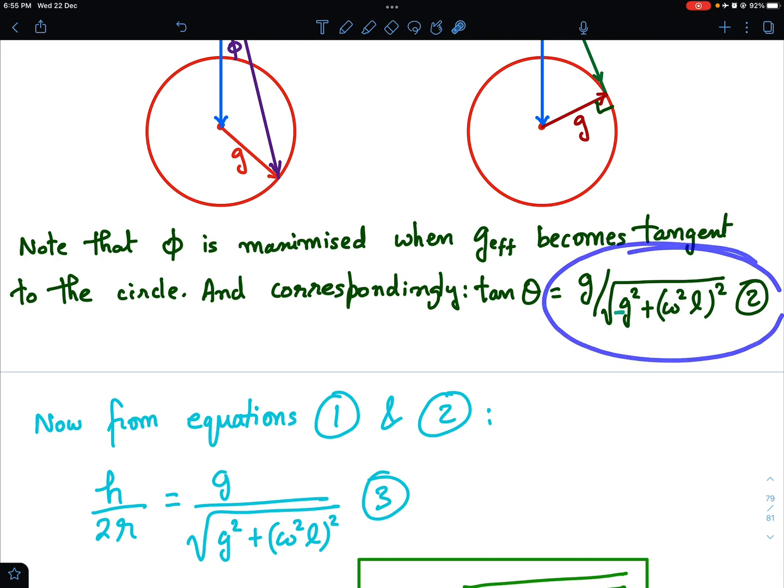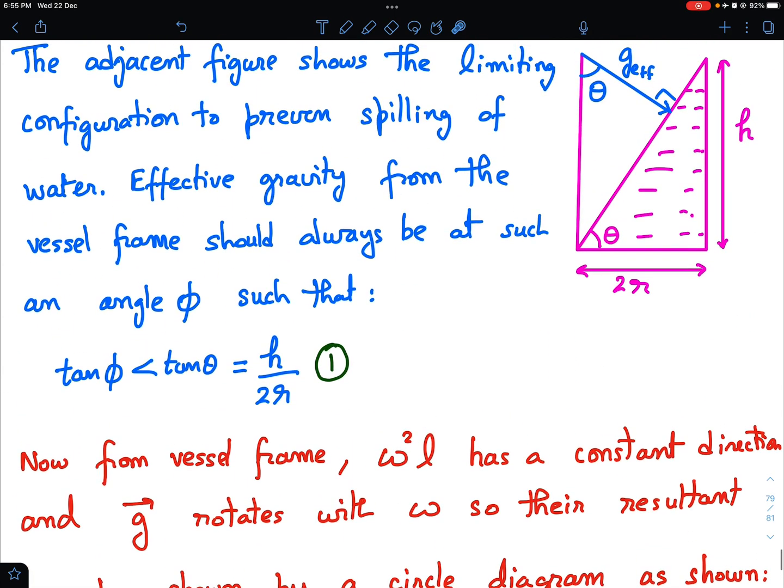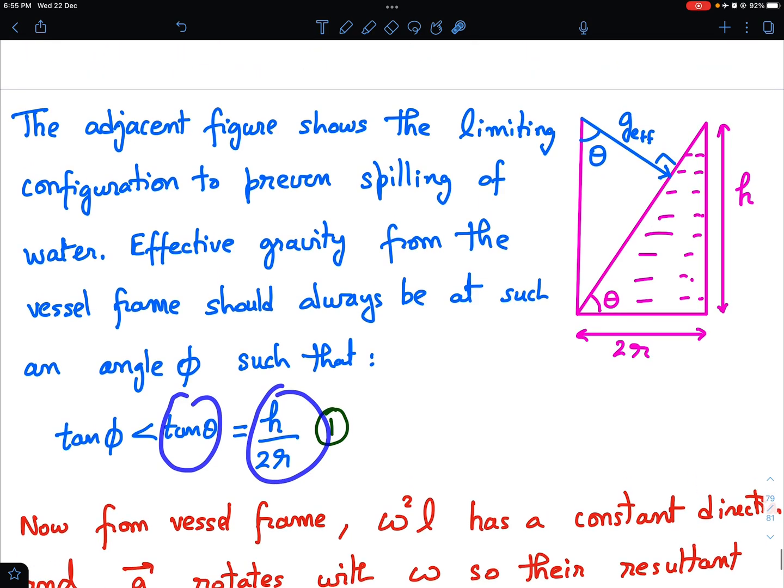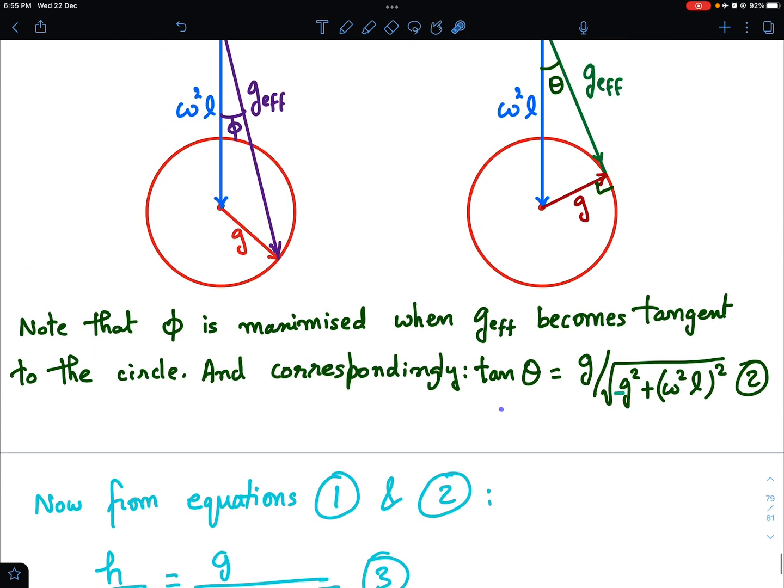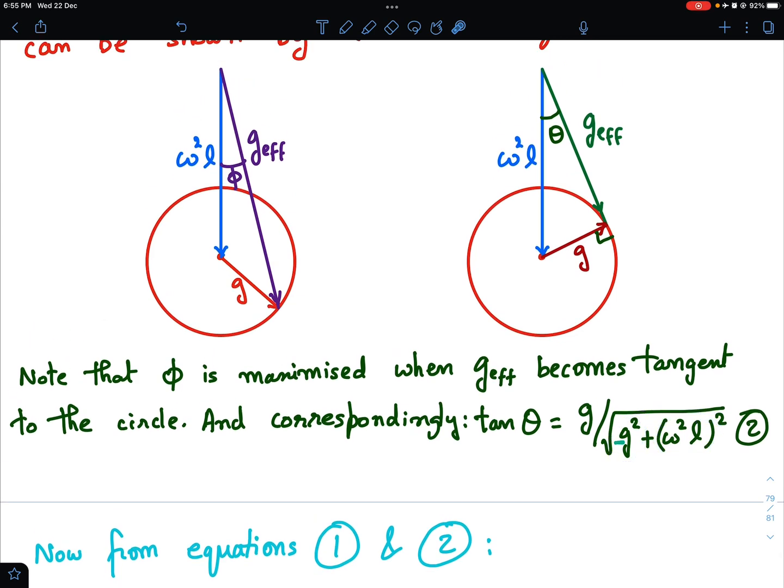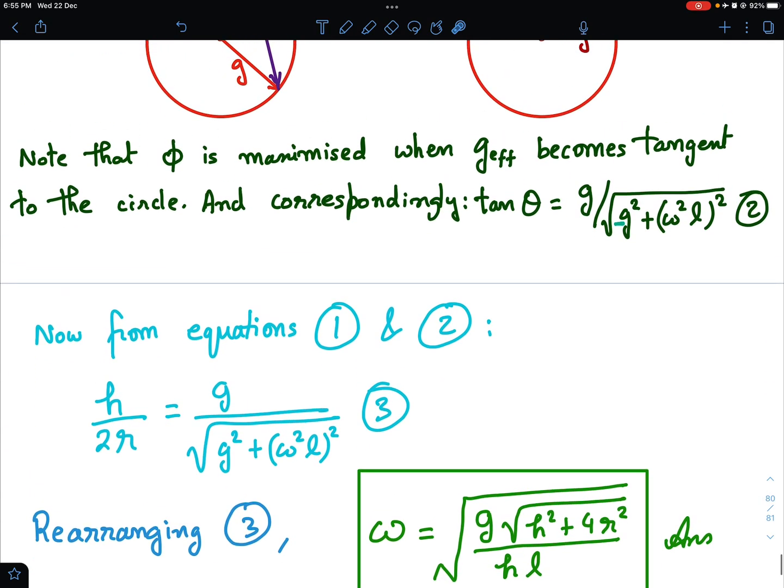Now from this equation, the equation 2 and the equation 1. Equation 1 was tan theta is h by 2r from this figure. And from here, tan theta is also G upon under root of omega squared L squared minus G squared. And using these two equations, I just equate them. And then, if you solve it, I have solved it correctly. I just made a mistake there.